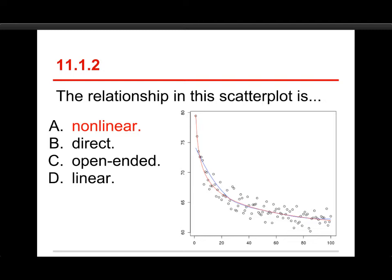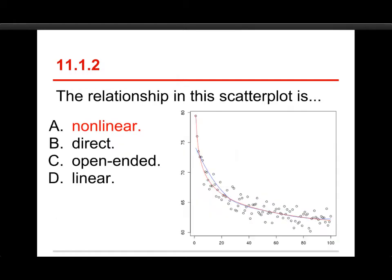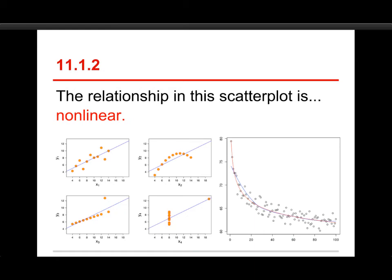By the way, the idea here of direct... Here's my chart here that shows actually Anscombe's Quartet. Actually, let me back up for one second. A direct relationship simply means a positive association. Low scores go with low scores. High scores go with high scores. Open-ended is just something I throw in.